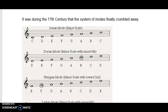The music of the Renaissance sounds quite strange to our ears because they didn't have major and minor scales like we know today — they worked with a system of modes. For example: C, D, E, F, G, A, B, C — that's the Ionian mode, the major scale as we know it today.